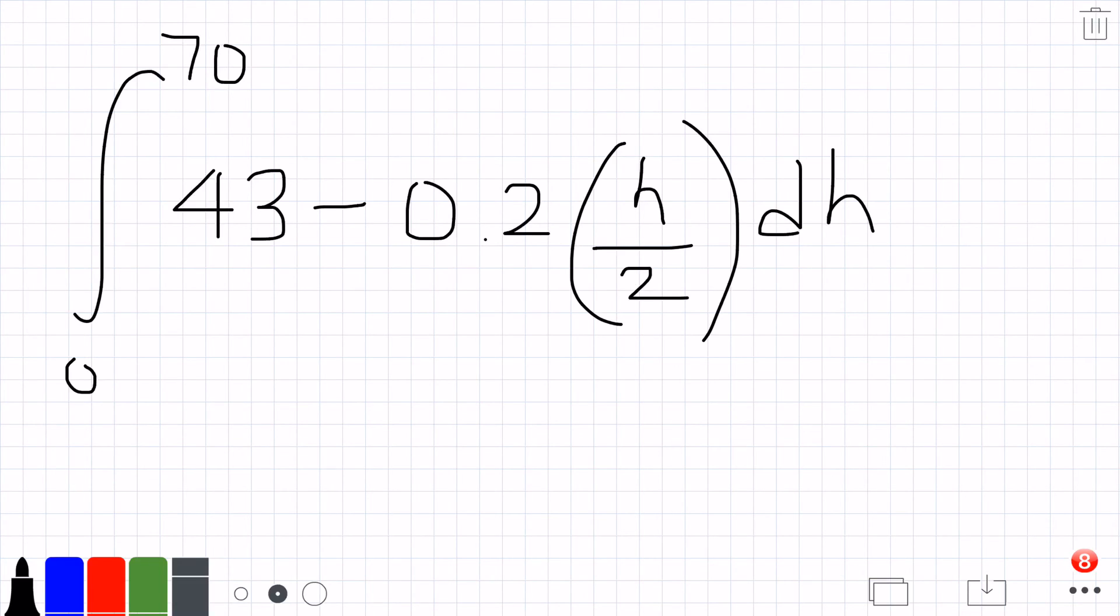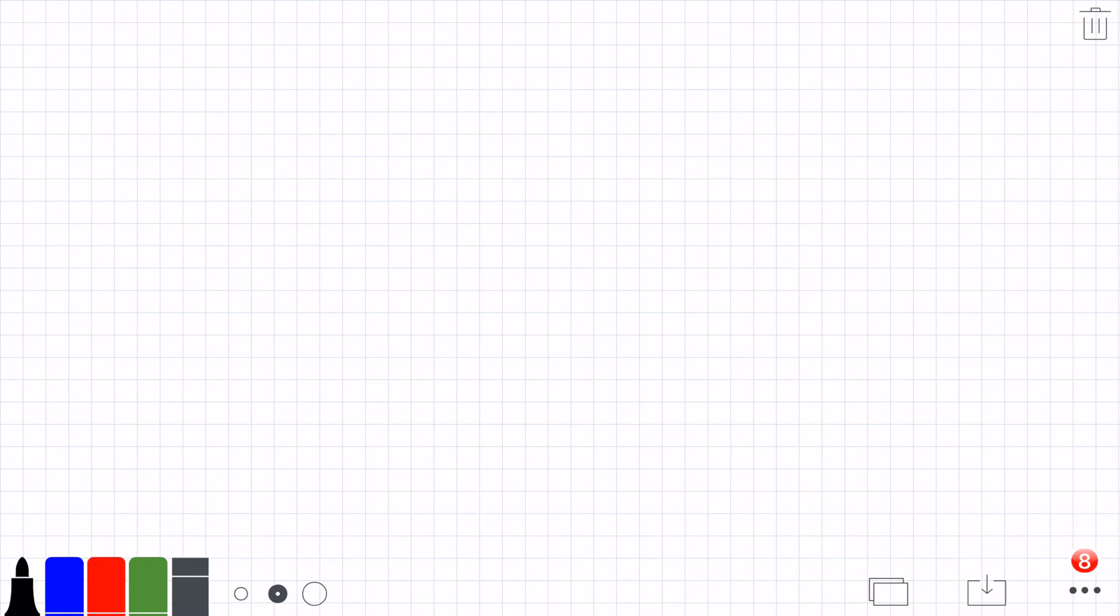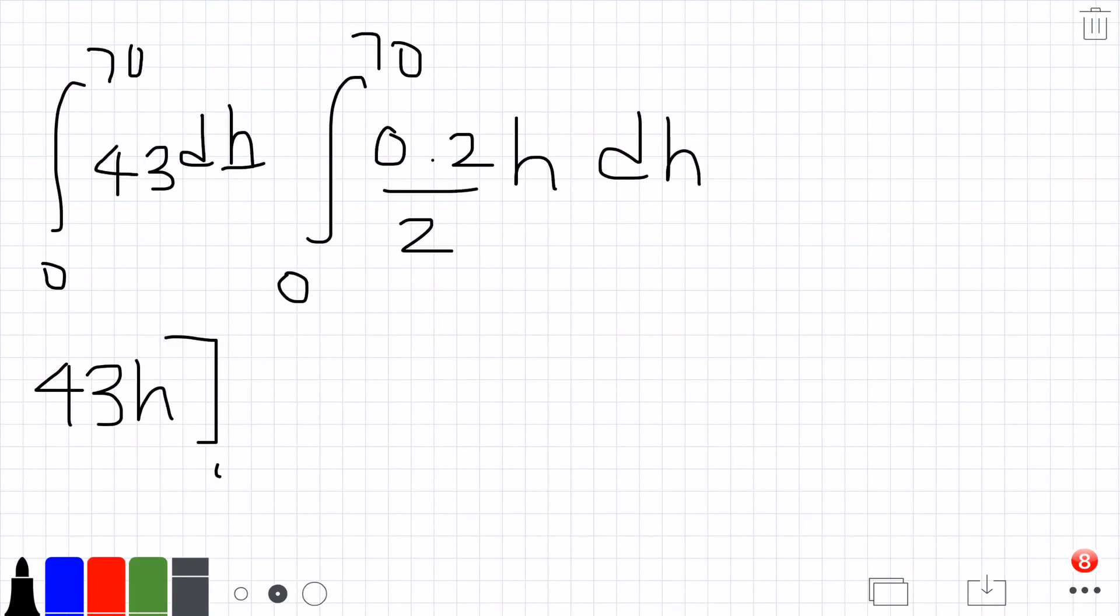To evaluate this integral, we have the integral from 0 to 70 of 43 dh. We can break it up into parts: integral from 0 to 70 of 0.2 over 2 times h dh. And we have 43h evaluated at 0 and 70, minus 0.2 over 4 h squared evaluated at 0 and 70.